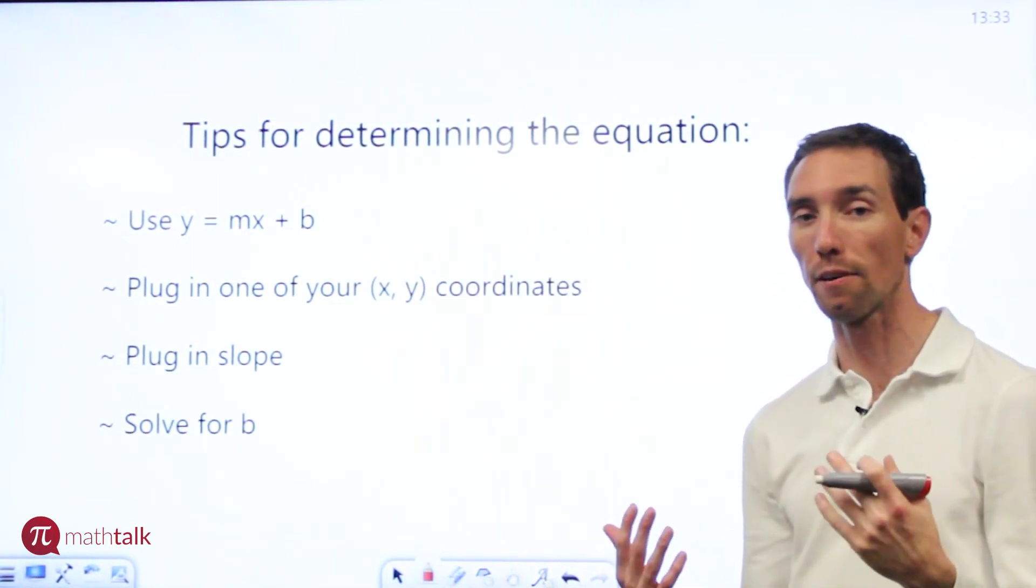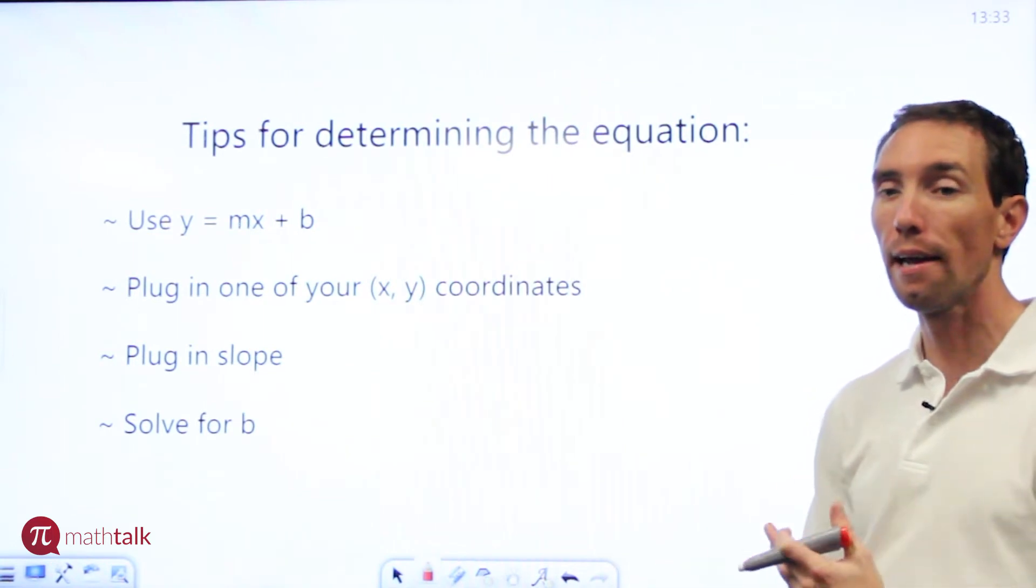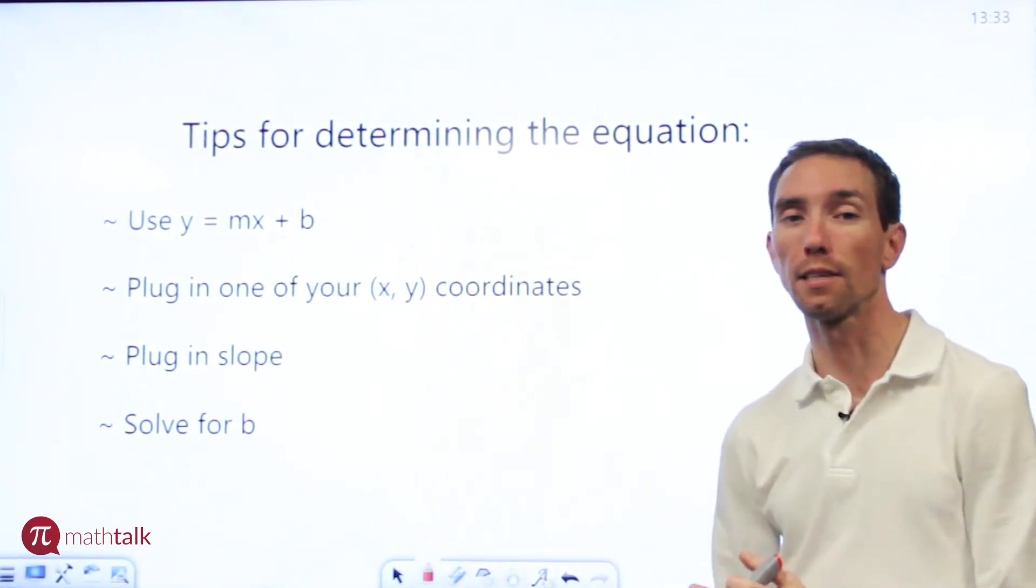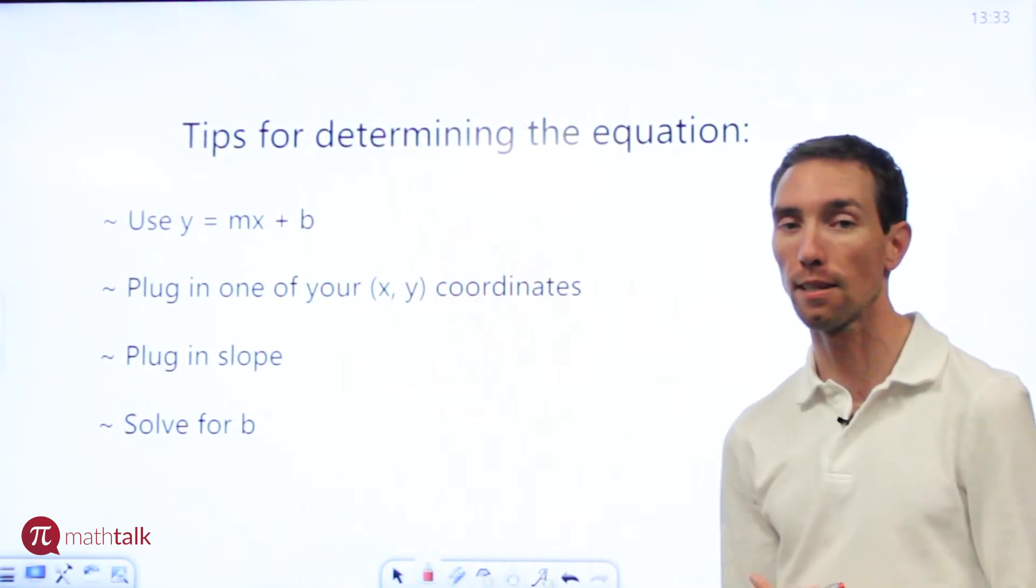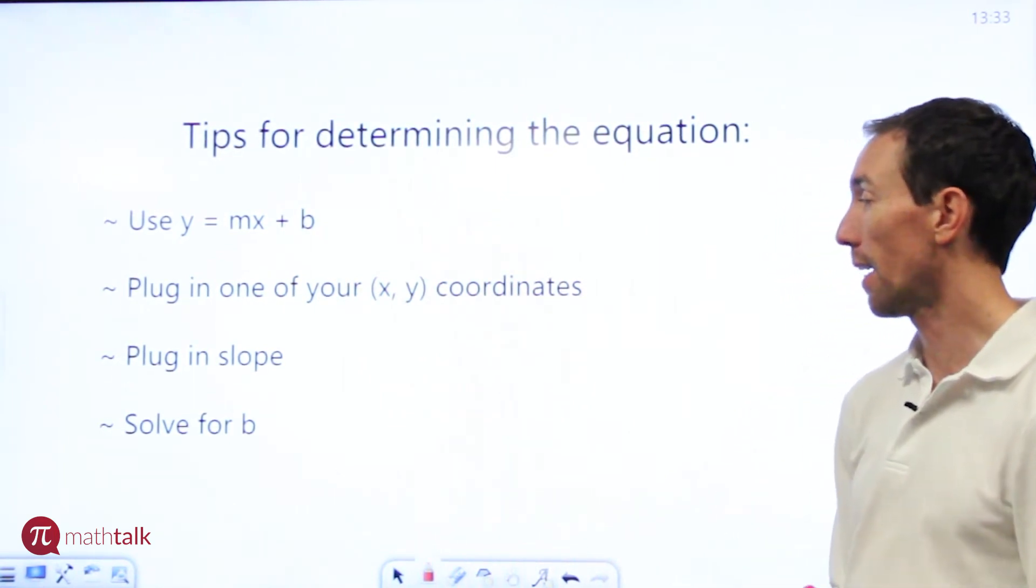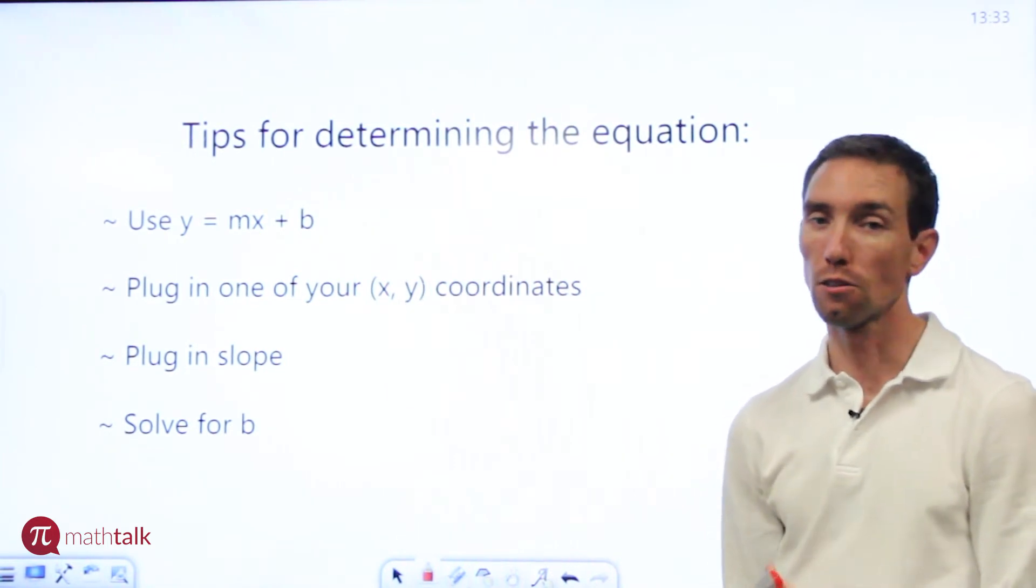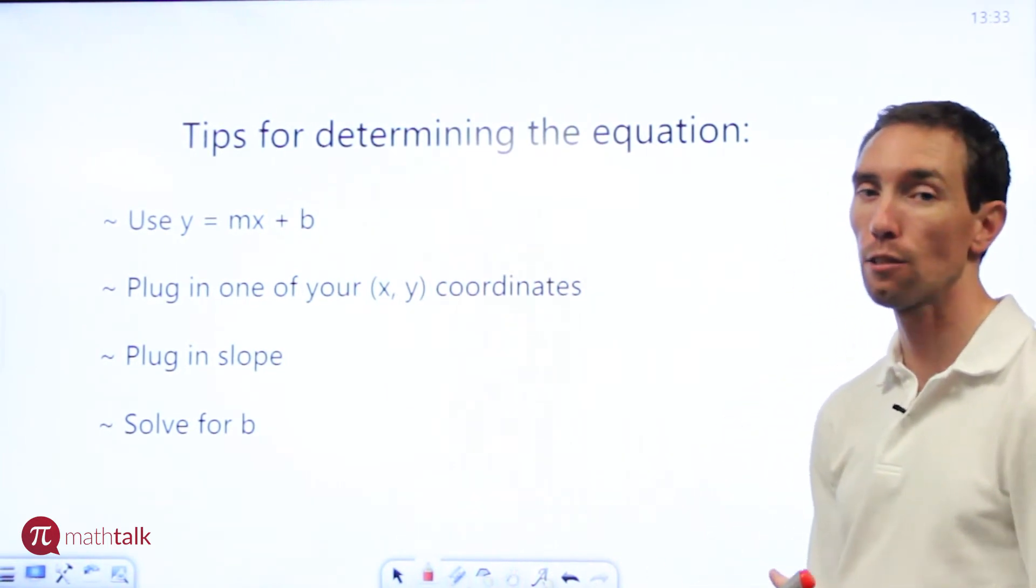Also what you want to do is plug in one of your xy coordinates into your equation. You just take the number for x and the number for y and plug it in. It helps you solve for the other variables. You want to plug in the slope if you're given the slope, and remember m is the letter used to represent slope. Then you want to go ahead and solve for b which is the y-intercept.